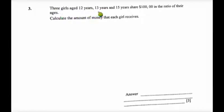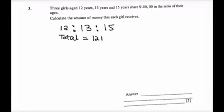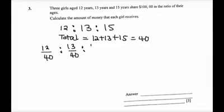Three girls aged 12 years, 13 years, and 15 years share $100 in the ratio of their ages. Calculate the amount of money that each girl receives. Here I must write down my ratios according to age, which is 12, 13, and 15, then add them to find the total of the ratios which we will use as a denominator. So this means we have 3 fractions here: 12 over 40, 13 over 40, 15 over 40.